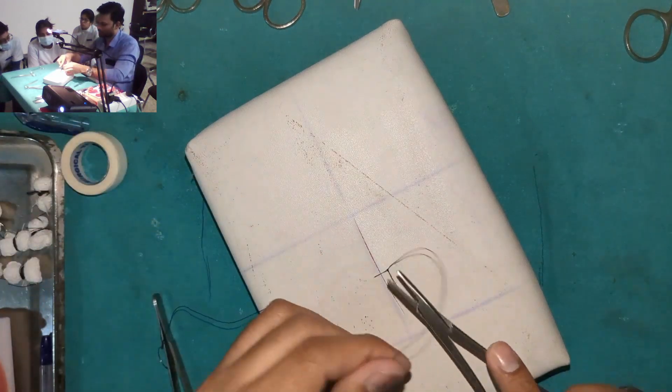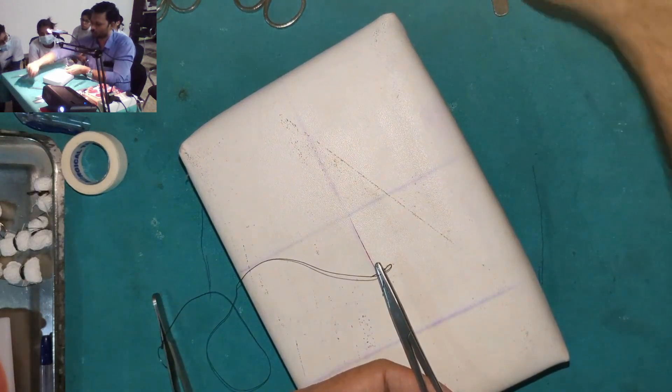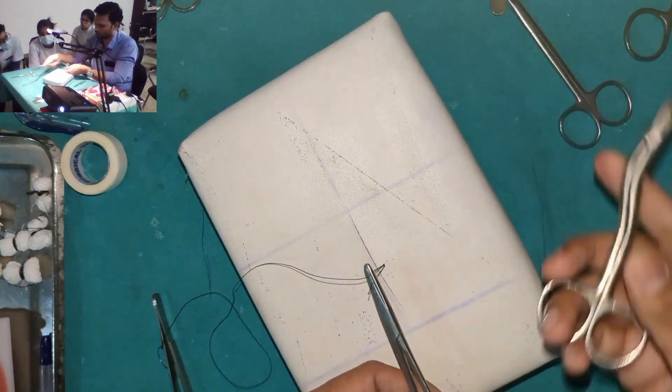Now when we cut the suture, I told you the magic number is 4 mm, right? So when you are going to cut the suture, I told you this is a suture cutting scissor.